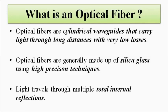Basically, optical fibers are made of silica glass — it's a very precise technique. The main mode of transmission of light from one point to another, source to destination, is through the process of total internal reflection. Light gets totally internally reflected within the optical fiber to reach from source to destination. Data is sent by modulating one of the characteristics of light such as frequency, wavelength, or amplitude using modulation techniques.